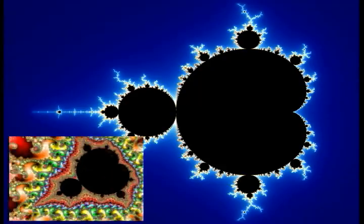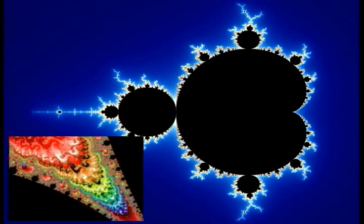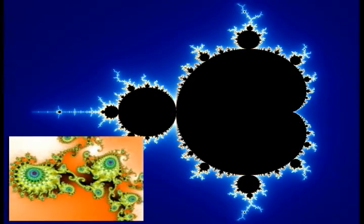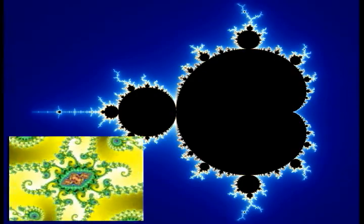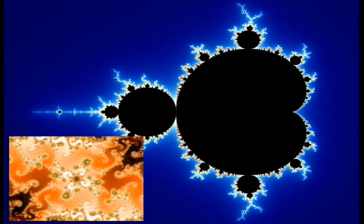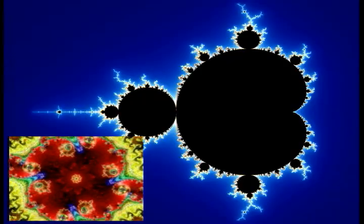First of all, the mathematical object is a fractal, and you can zoom infinitely deep into it and always see new, complex structures. It is also self-similar to some degree, which means that deep inside it you can find structures that resemble the entire set.